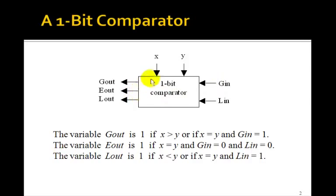Eout is going to be 1 if x is equal to y, either they're both 0 or both 1, and Gin and Lin are both 0.